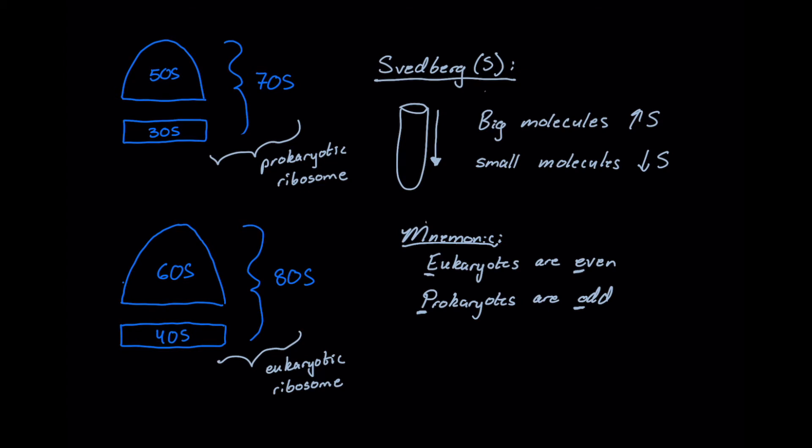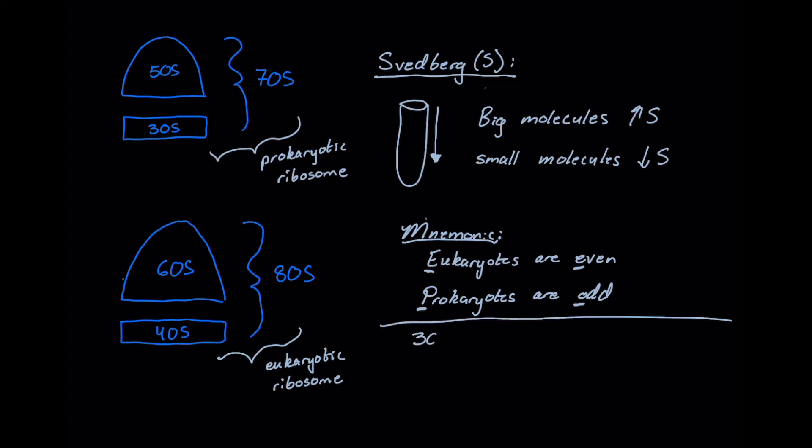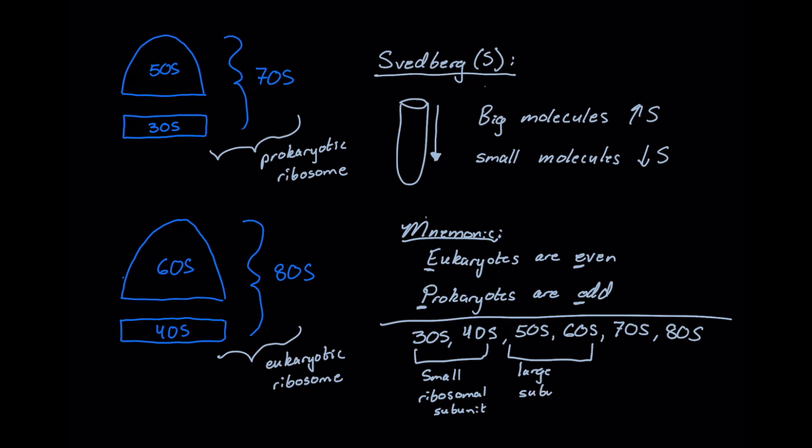Another one we could use is just knowing that we start at 30S and if we go up by units of 10 Svedbergs all the way to 80, we know that these groupings will be our small ribosomal subunit, large subunit, and this will be the whole ribosome.